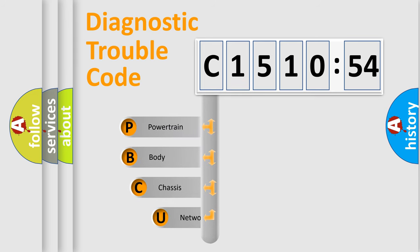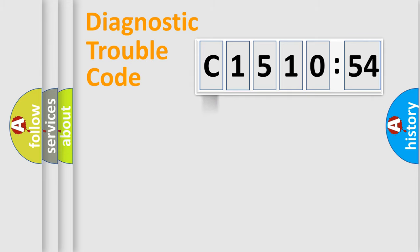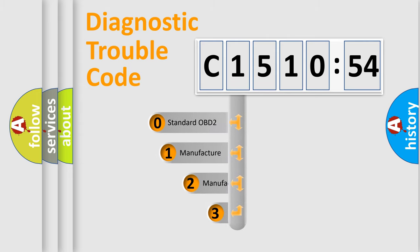First, let's look at the history of diagnostic fault code composition according to the OBD2 protocol, which is unified for all automakers since 2000. We divide the electric system of automobile into four basic units: Powertrain, Body, Chassis, and Network.